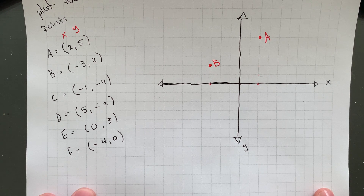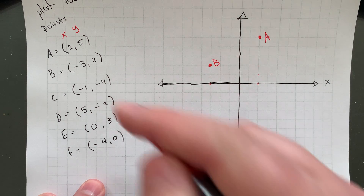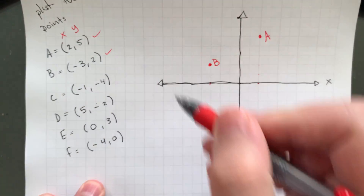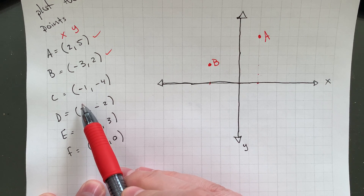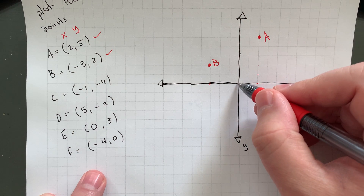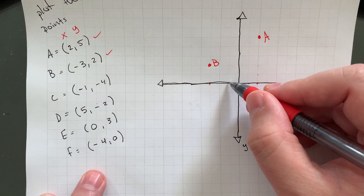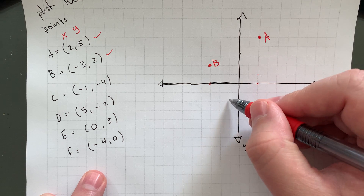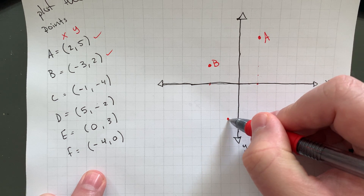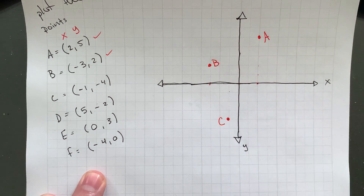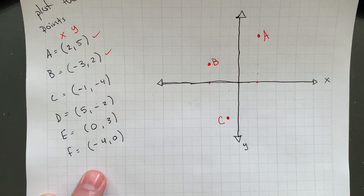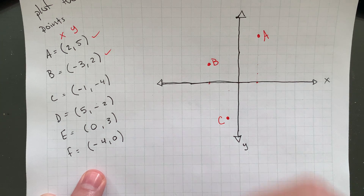The C coordinate is negative 1, negative 4. So that's a double negative — that'll be quadrant 3. Negative 1 is just 1 to the left and then down 1, 2, 3, 4. So negative 1, negative 4 over here in quadrant 3 — that's kind of where I expected to end up and that's what I've done.